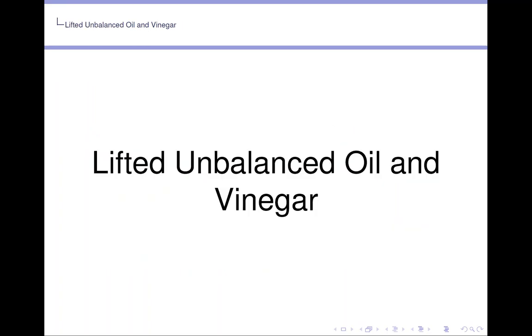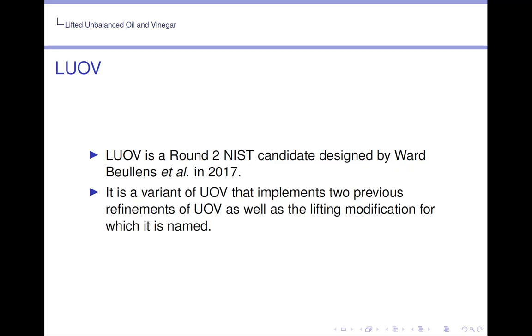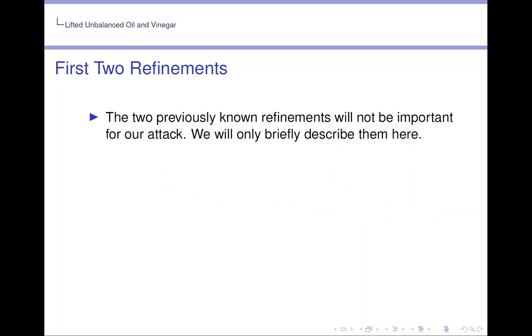Lifted unbalanced oil and vinegar. LUOV is a Round 2 NIST candidate designed by Ward Beullens et al. in 2017. It is a variant of UOV that implements two previous refinements of UOV, as well as the lifting modification for which it is named. The two previously known refinements will not be important for our attack. We will only briefly discuss them here.